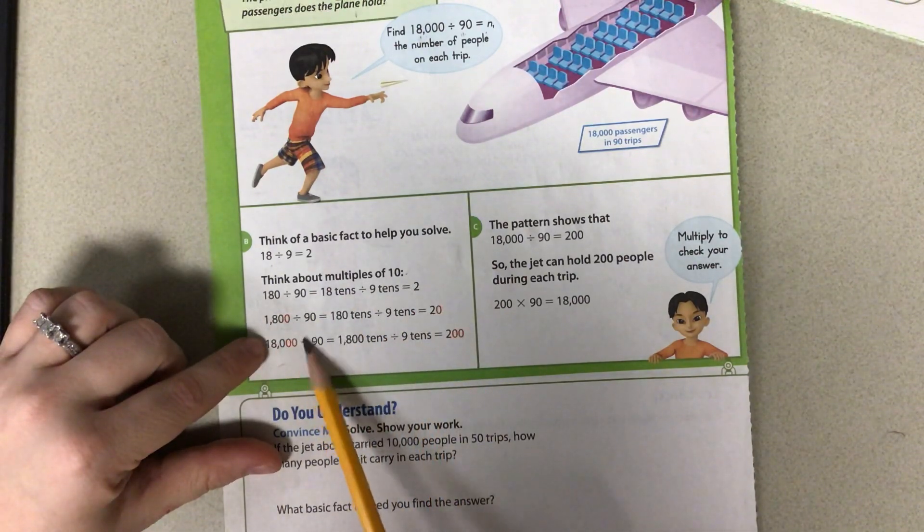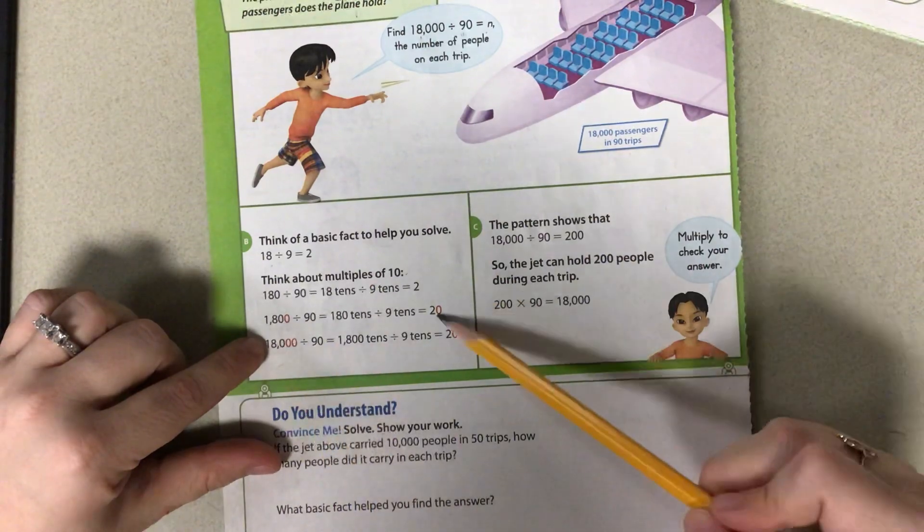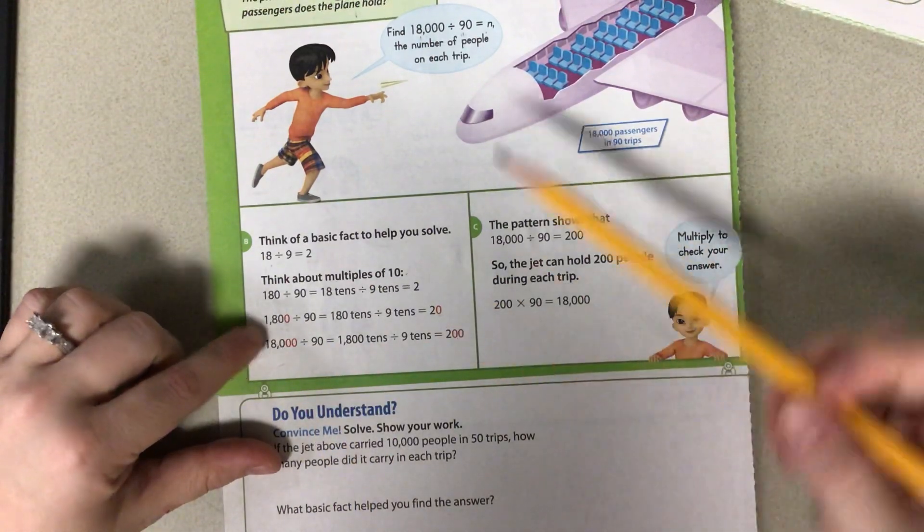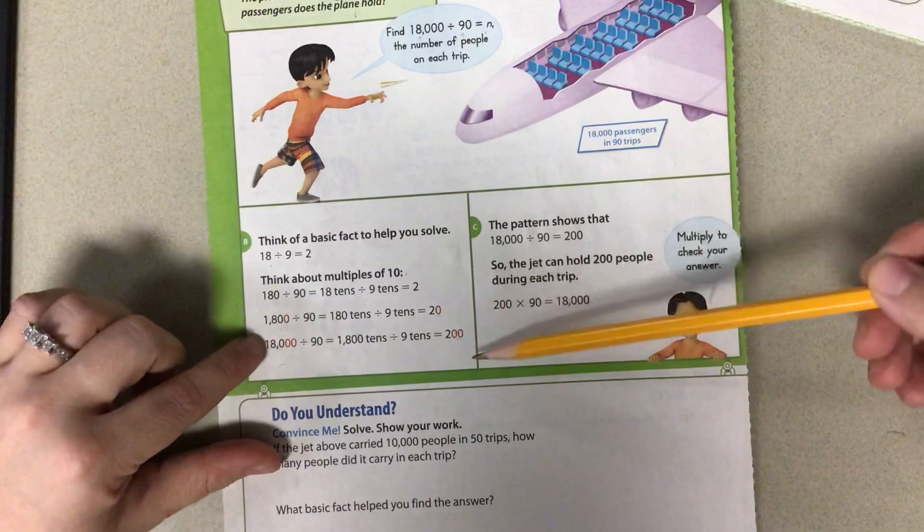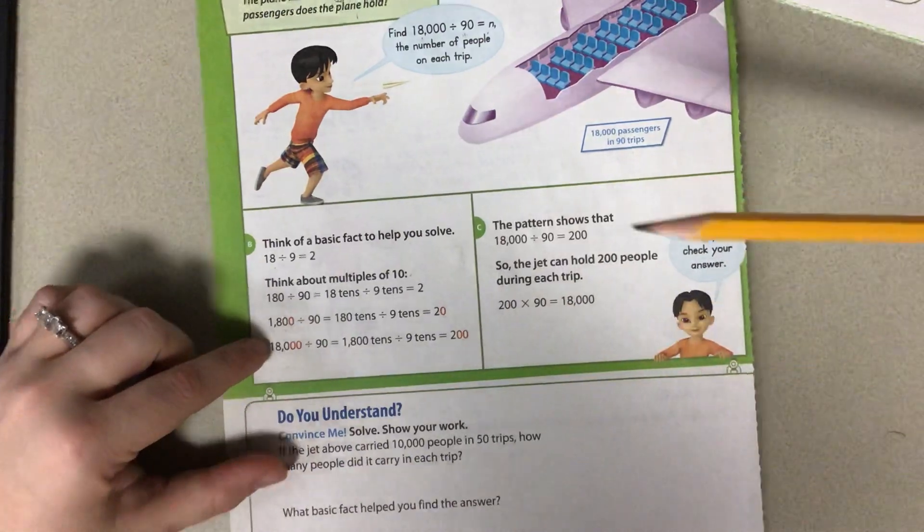That's 10 times larger or one place value larger. So we get one place value larger. Again, from here to here, we got one place value larger. So from here to here, we got one place value larger. So starting at the beginning and working your way into your larger numbers can help you figure out your answers.